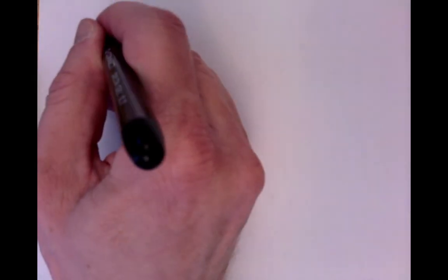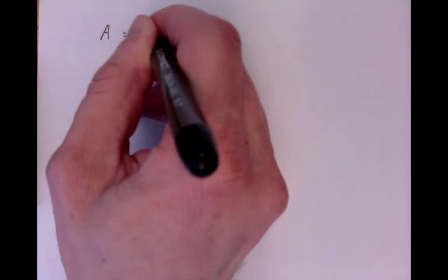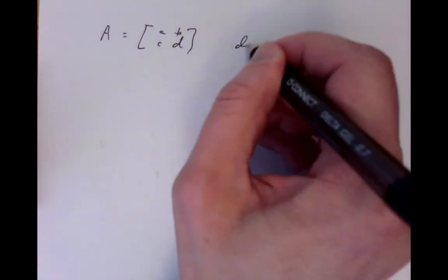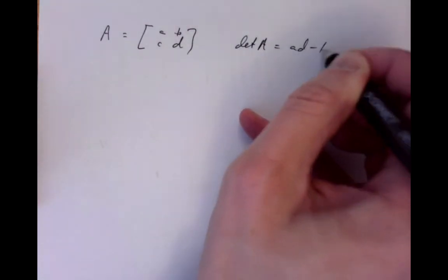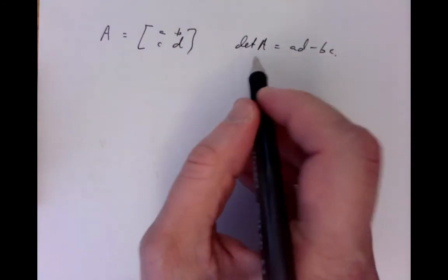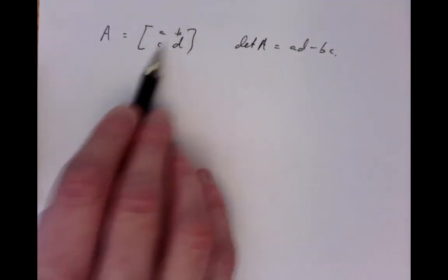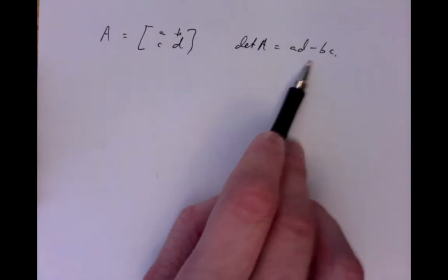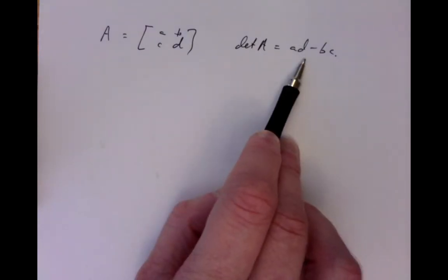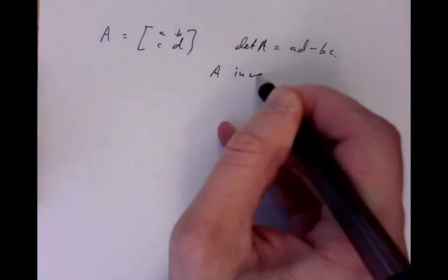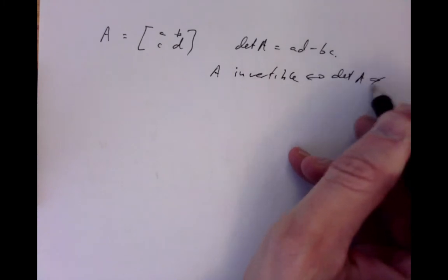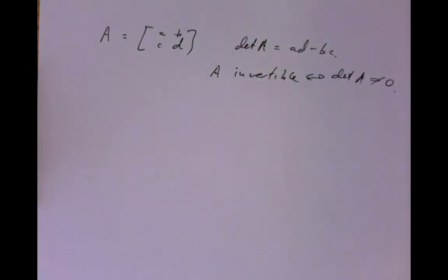We said previously that 2x2 matrices had determinants — that this matrix had associated to it a number: det(A) = AD minus BC. If A is a 2x2 matrix with entries A, B, C, D, this is just a single number associated to that matrix. We know that A is invertible exactly when the determinant of A is not zero — so it detects invertibility. That's one property we'd like a determinant to have.